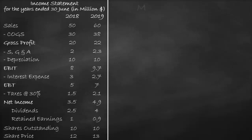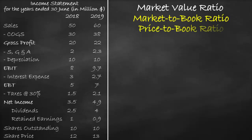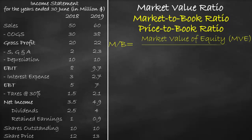An example of a market value ratio is the market to book ratio, which is also called the price to book ratio. The market to book ratio formula is the market value of the equity divided by the book value of the equity.